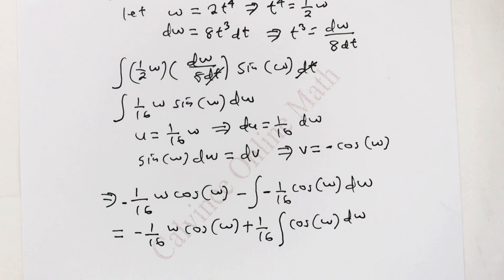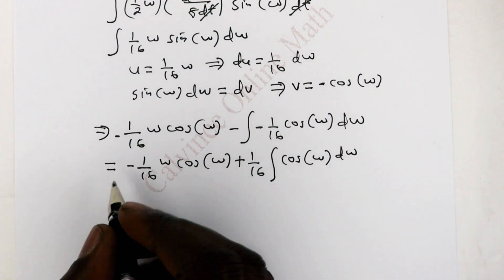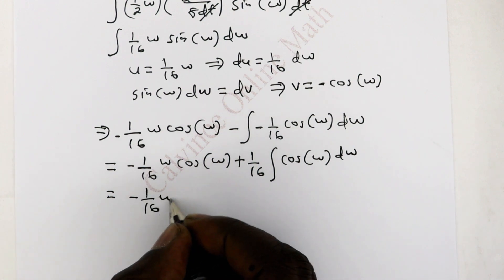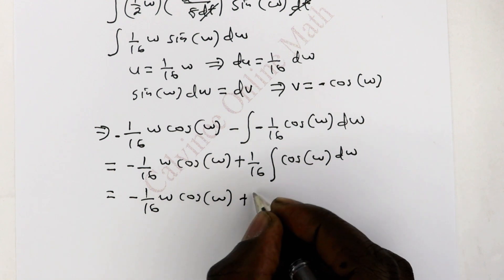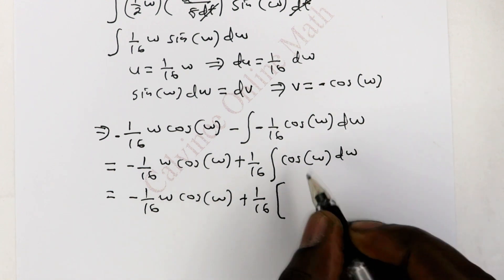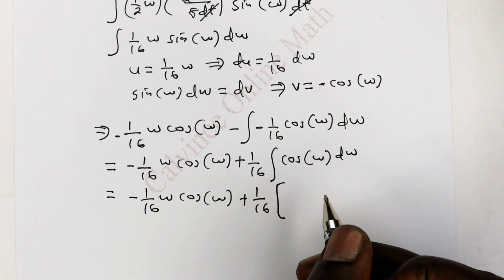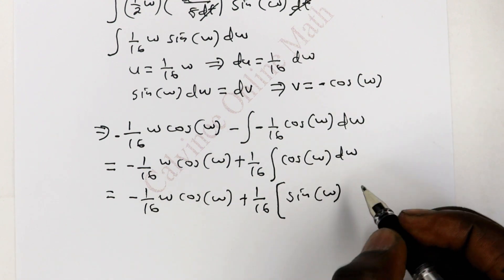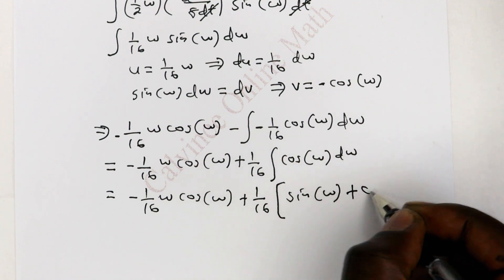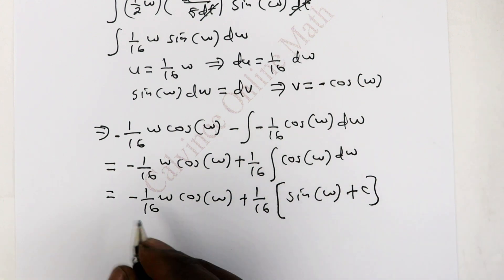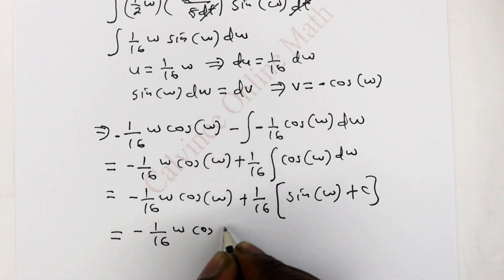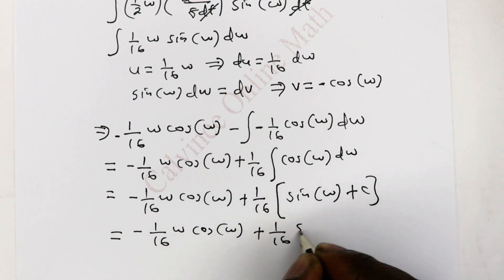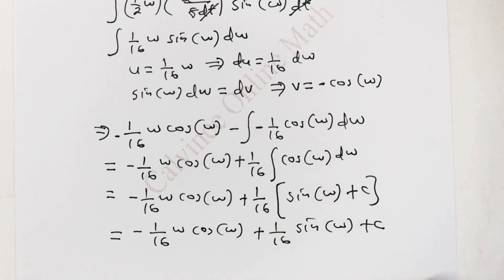The remaining integral does not require integration by parts and can be evaluated directly. Integrating cos of w gives positive sin of w. So we have negative (1/16) w cos of w plus (1/16) sin of w, and we add the constant of integration C.